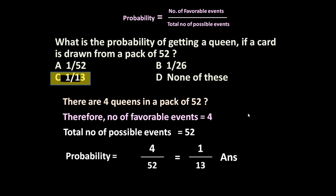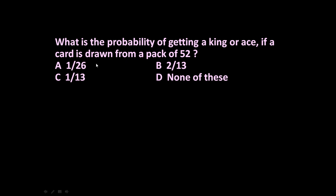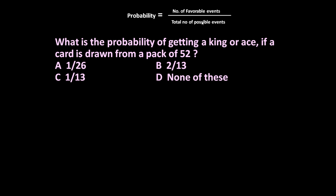Now let's solve one more similar type of problem with a slight difference. The problem is: what is the probability of getting a king or ace if a card is drawn from a pack of 52? We want to draw a single card that must be either a king or an ace. The formula is: probability equals number of favorable events divided by total number of possible events.